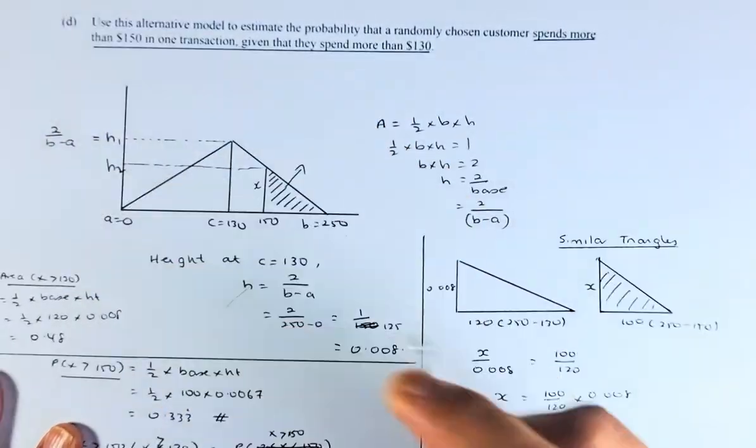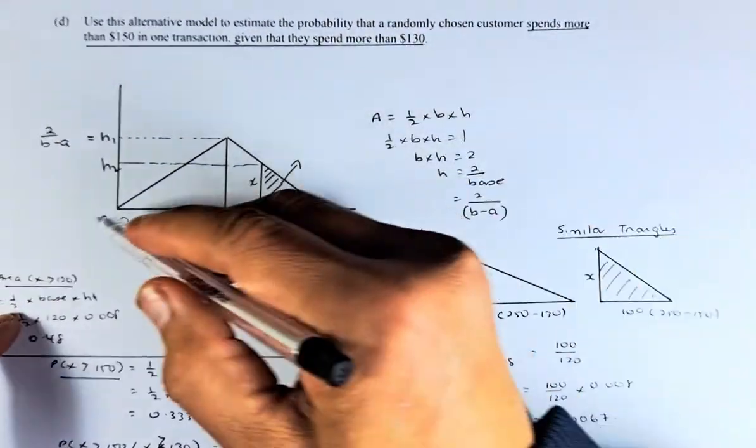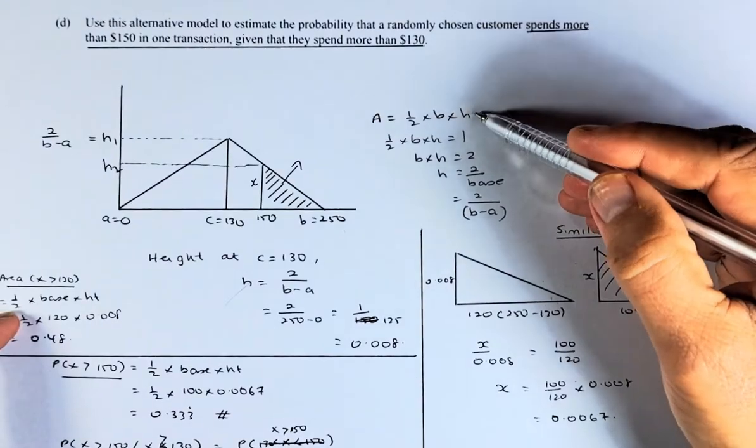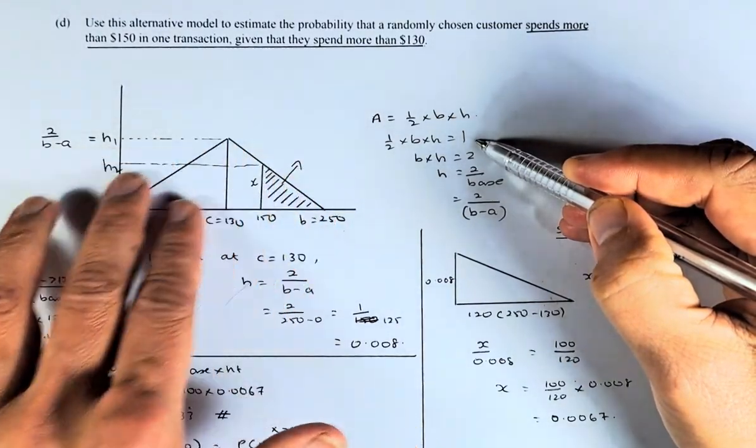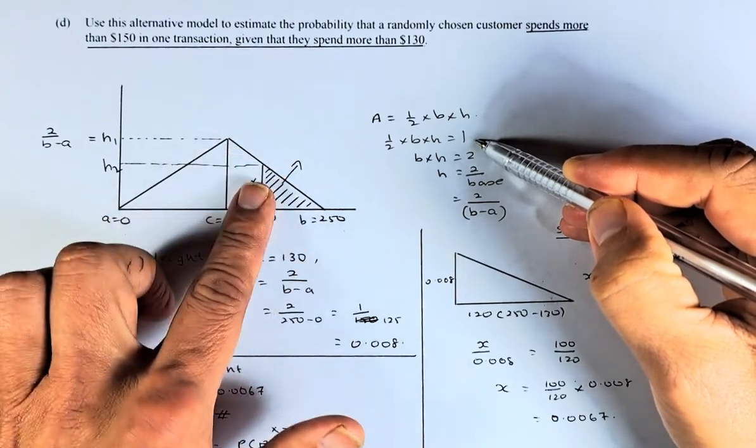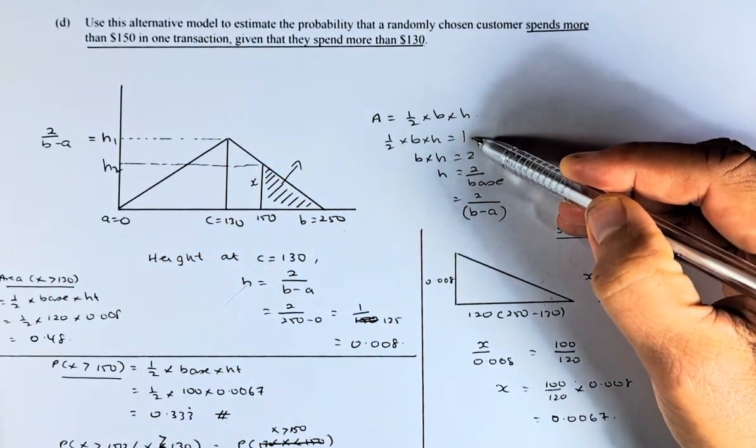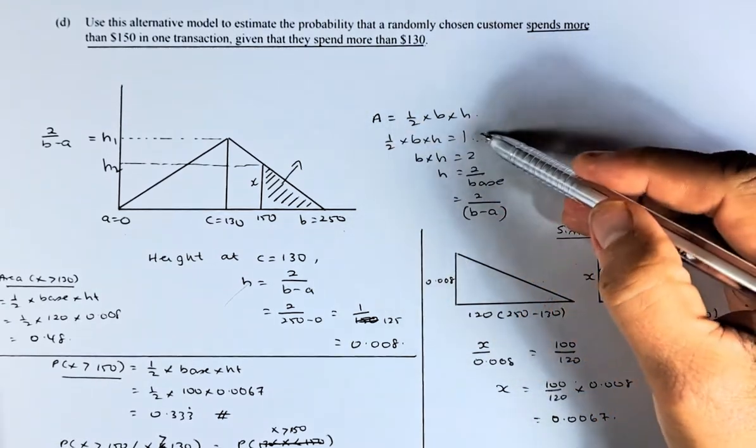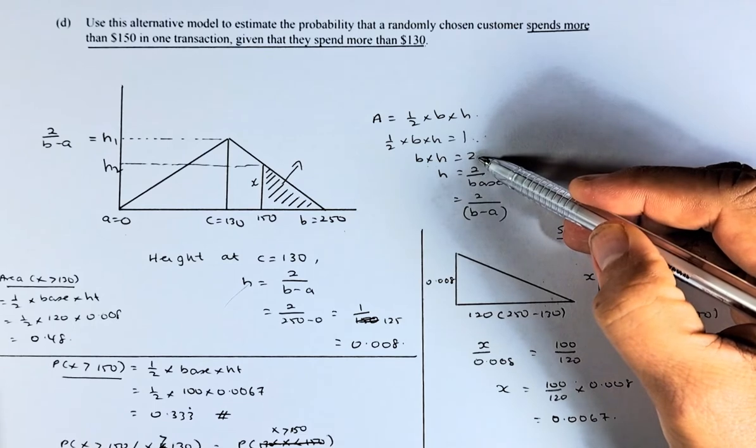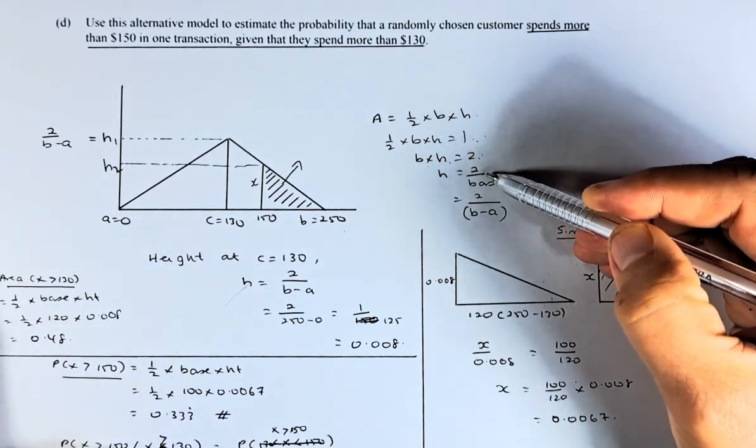So we need to get H1 and H2. H1 is a formula to calculate that height. The area of a triangle is half base times height, which equals 1 because this will be the triangular distribution. Every area under the triangle has probability 1. So it equals 1. So B times H, multiply by 2 on both sides. B times H equals 2. To get H, we take 2 divided by the base.